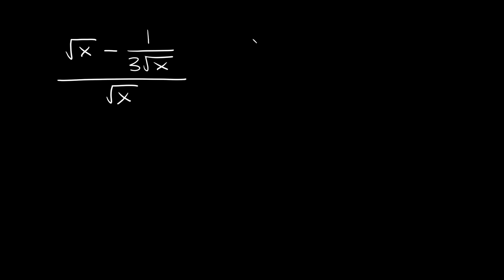In order to find the LCD, all you have to do is multiply all your different denominators together. So let's identify the denominators on all our terms. The square root of x doesn't have a denominator — it's not in a fraction — but we can make it a fraction by putting it over 1. This one is already in a fraction, so the denominator here is 3 times the square root of x.